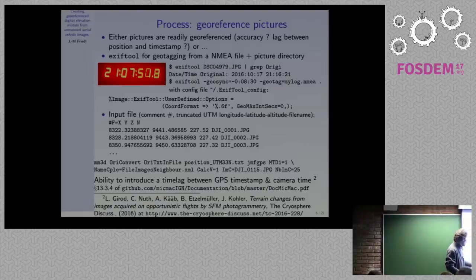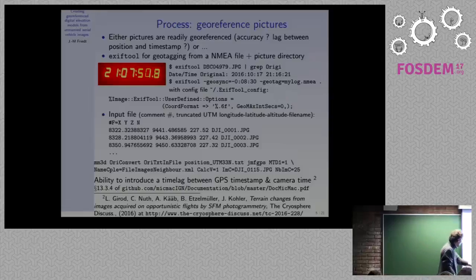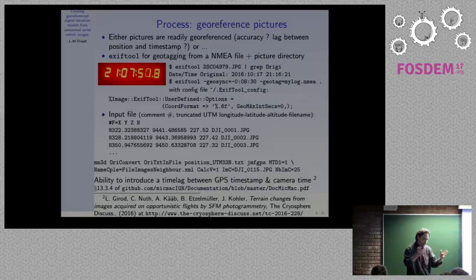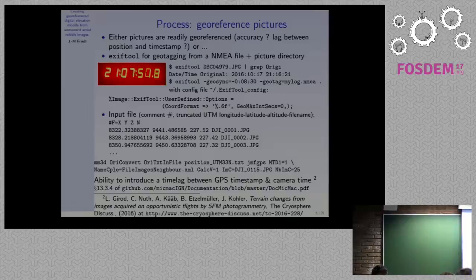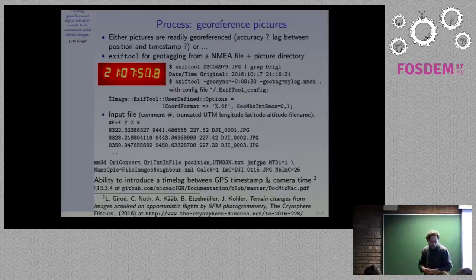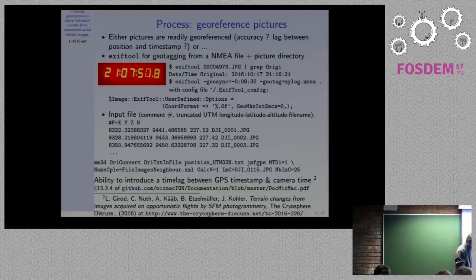MicMac commands are always prefixed with mm3d. I use mm3d to convert the orientation from the text file to XML format. We also need to select a subset of images for calibrating lens properties — we select a reference image that has maximum elevation variation in the scene, and use about 25 images for lens calibration.